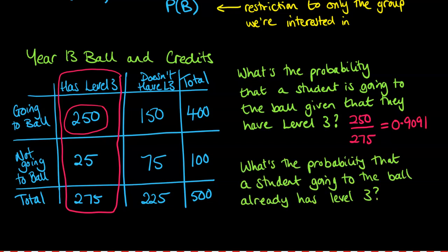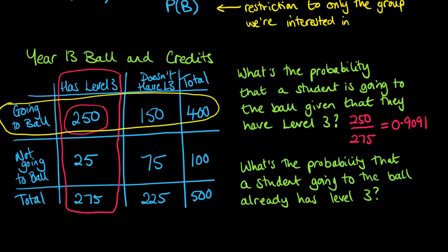I'm going to ask another question that looks very similar but is actually different, and this is the importance of getting these the right way around. What's the probability that a student going to the ball already has level 3? In this case, we're looking for our larger group being restricted down to only the ones going to the ball. If they're going to the ball, what's the chance they already have level 3? That's 250 out of 400.